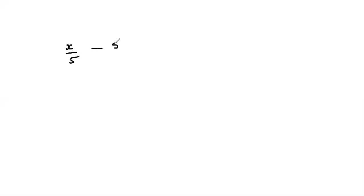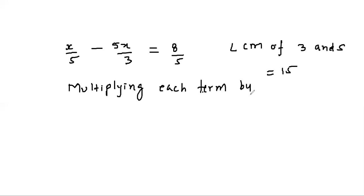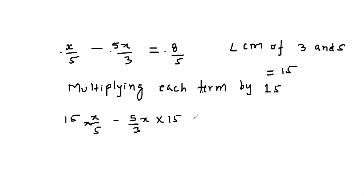Now let's take another question: x/5 - 5x/3 = 8/5. Again we take the LCM of 3 and 5, which is 15. We multiply each term by 15: 15×(x/5) - 15×(5x/3) = 15×(8/5).